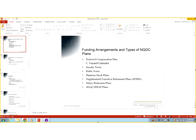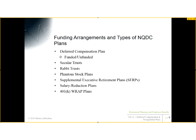We have the basic deferred comp plans, which can be either funded or unfunded. Funded and unfunded plans have a built-in substantial risk of forfeiture because the employer might not pay. Funded plans need some other way to establish substantial risk of forfeiture. Examples of funded plans are secular trusts and rabbi trusts. We'll also get into phantom stock plans, supplemental executive retirement plans (SERPs), salary reduction plans, and 401k wrap plans.